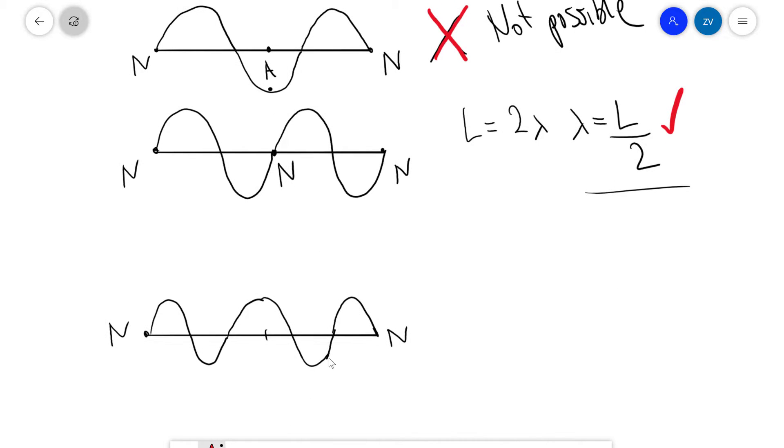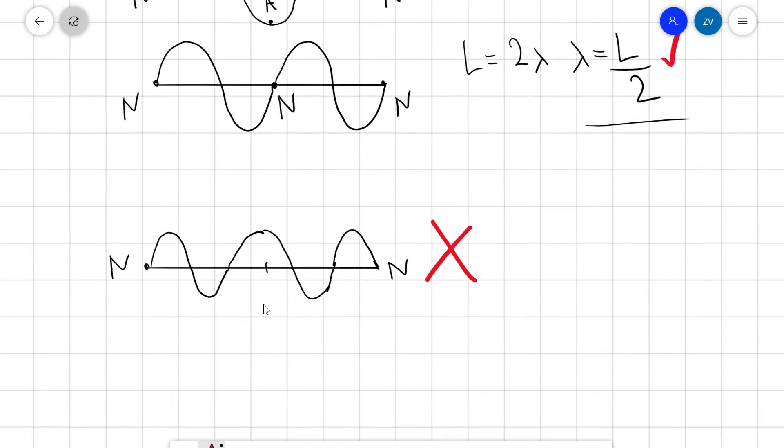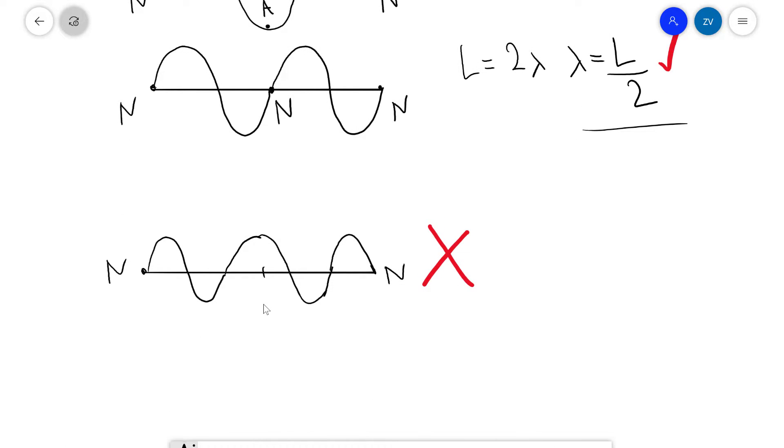Now the next harmonic that I've drawn, adding another half a wavelength, will not be possible because once again we have an anti-node in the center. However, the next one along will be possible, and if we were to draw that out, we're going to see that lambda will be L over 4.